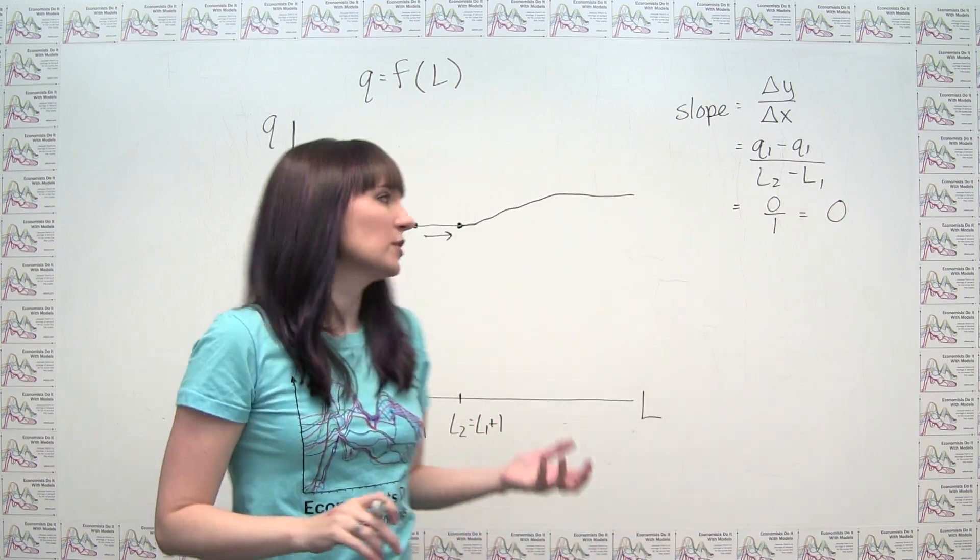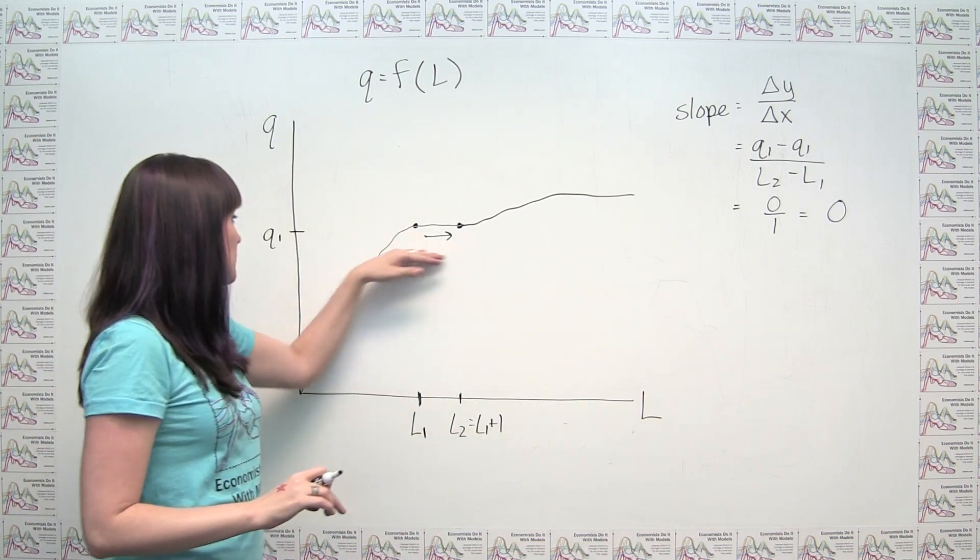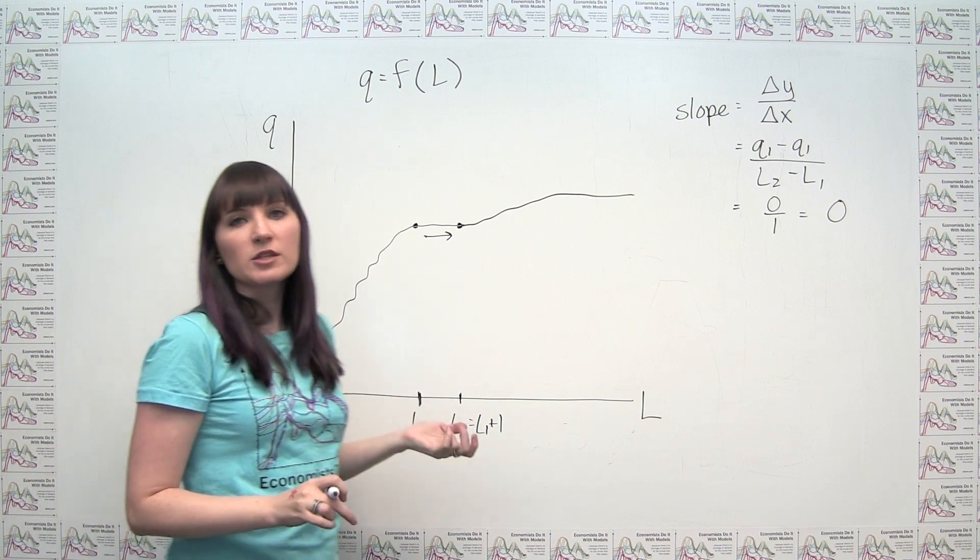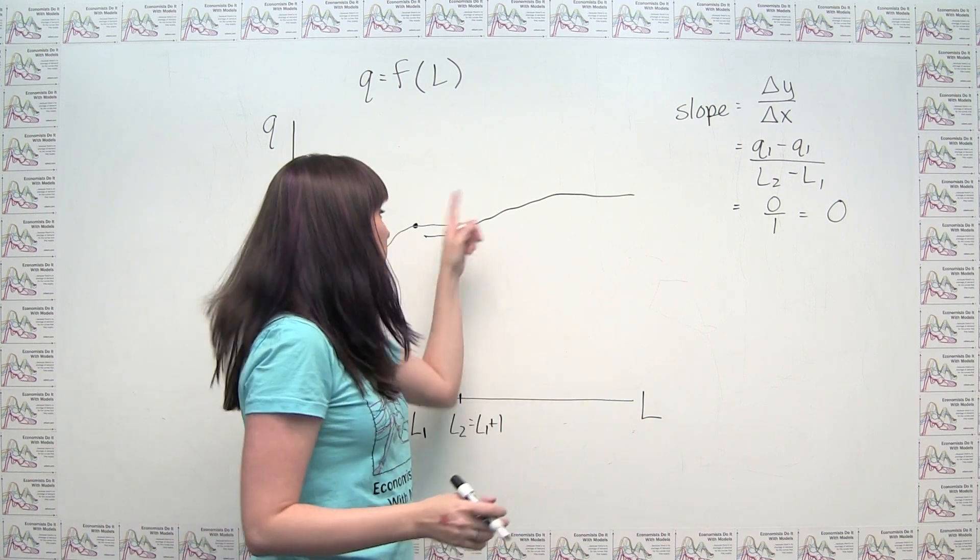So the specific answer to the question is if an additional unit of labor doesn't produce any additional output, then the production function must have a slope of 0 at that point or in that region.